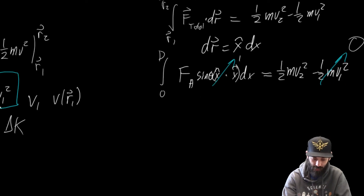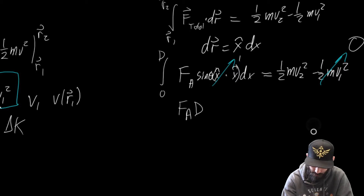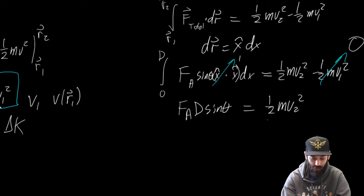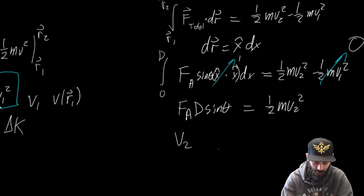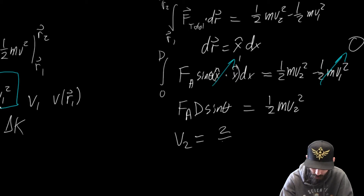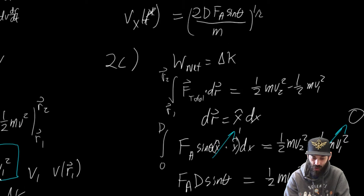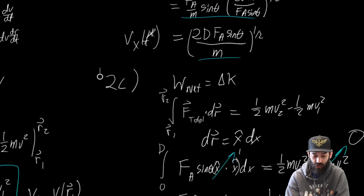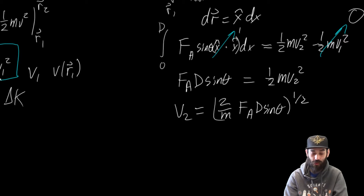Now let's do this integral. The integral is simple here: F_A times D times sine of theta equals one-half mv₂². To find v₂, I multiply both sides by 2/m and take a square root. So v₂, the velocity at distance D, is going to be equal to (2 over m times F_A times D times sine of theta) to the one-half power. Now you can see why I rearranged the Part B answer into that form — so I can more easily compare, and I end up seeing I get exactly the same answer regardless of which approach I use. So that's Part C.